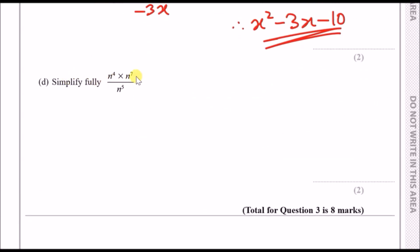That means our final result is therefore x squared minus 3x minus 10. And lastly for part d, simplify fully this fraction. When you're multiplying terms that have powers with the same bases like n, you simply add the powers. So n to the 4 times n to the 7, if you add up 4 and 7 you get n to the 11 and you still have n to the 5 below. When you divide you subtract the powers, so 11 take away 5 is going to give us n to the 6.